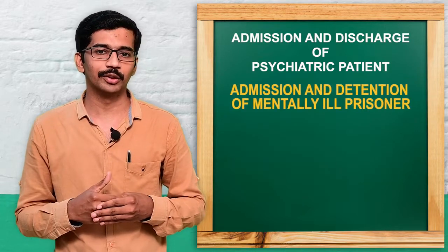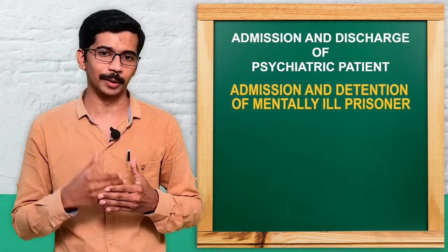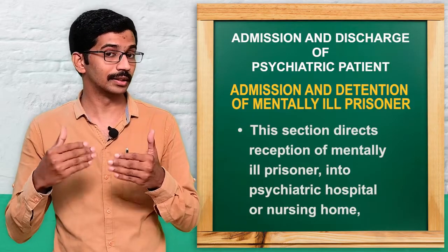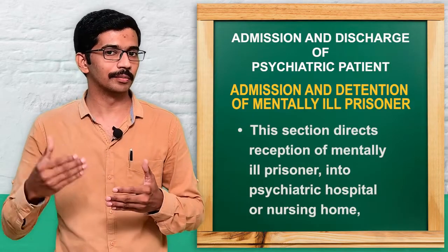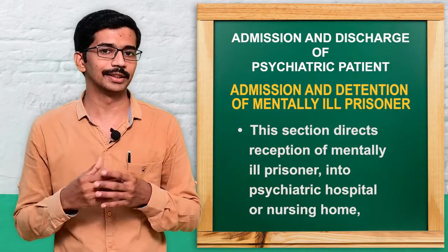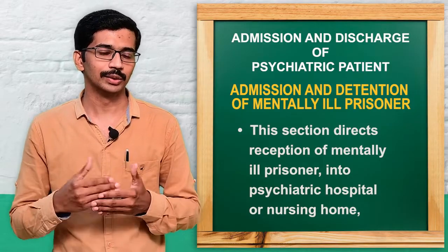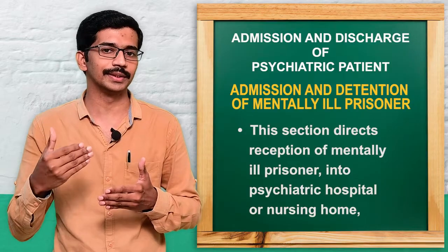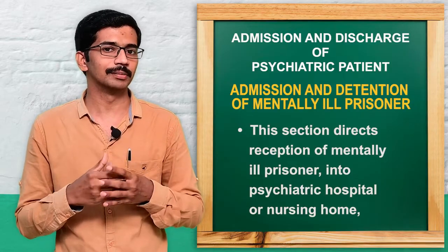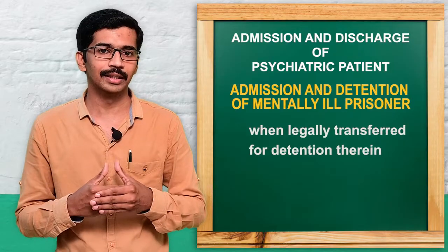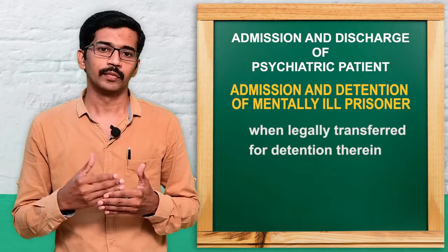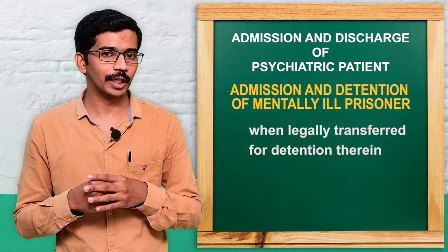The last type is admission of a mentally ill prisoner. This applies when a person who committed a crime also becomes a psychiatric patient. In such cases, the mentally ill prisoner will be sent to a psychiatric hospital for treatment, detained there legally based on the law.